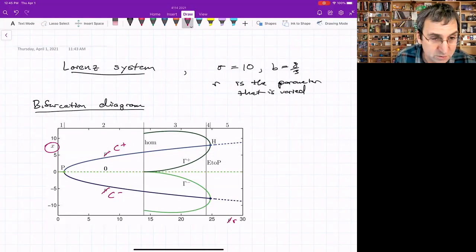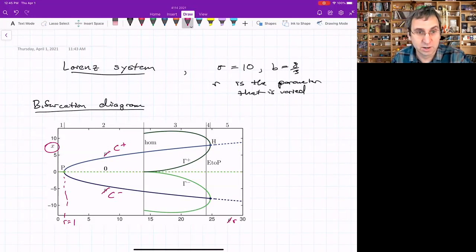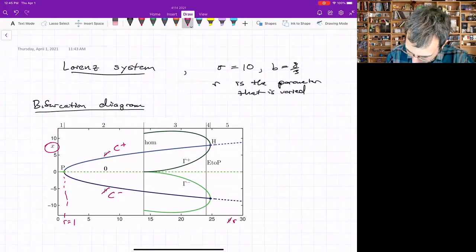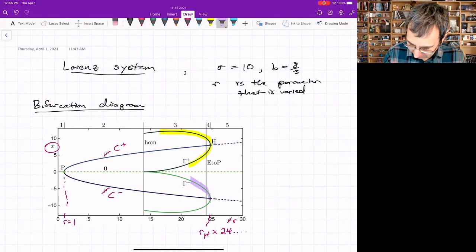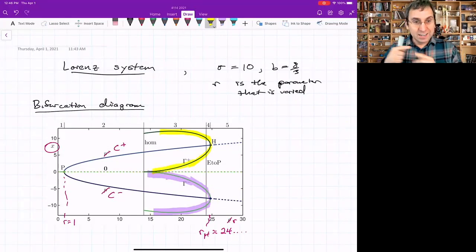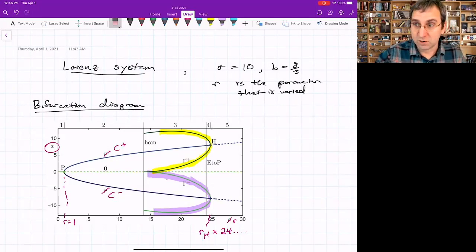This is showing as a function of r, just giving the x position of fixed points and also periodic orbits. So this point P, that's the main pitchfork, P for pitchfork bifurcation. That's when the origin goes from being stable, in fact, globally stable, to unstable. And you've got these two branches of fixed points that show up, C plus and C minus, at this value of the Hopf bifurcation, which was 24 point something. There's a subcritical Hopf bifurcation. So these branches that show up around each of the points are unstable. But if you follow them backward, at some point, those two branches will actually intersect. These unstable limit cycles will intersect at what's called a homoclinic bifurcation at about 13.926.